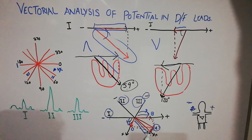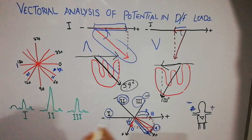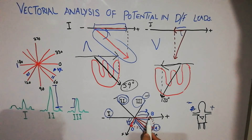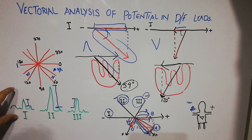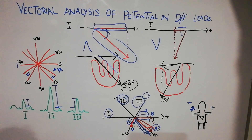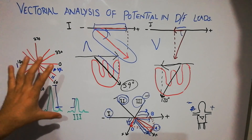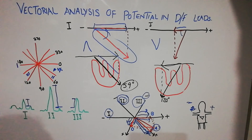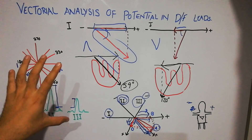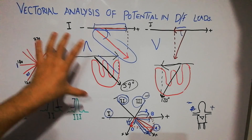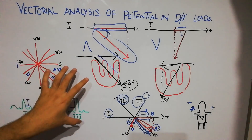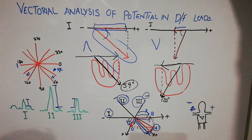Looking at the leads individually: in Lead II the shadow of this vector is quite large — almost double — while the shadow is very small in Lead III and also very small in Lead I. This is how ECG strips show how different leads look at the heart and differently perceive the same vector from different angles, giving different data sets that, when analyzed properly, reveal the cardiac axis. That's all about the vectorial analysis of potential in different leads. In the next lecture we will discuss the vectorial analysis of potential for a normal QRS complex in a normal ECG.